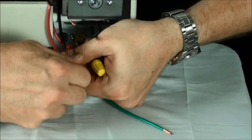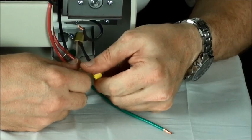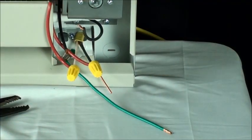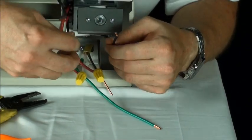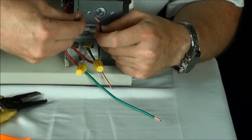After you get your incoming power hooked up, you want to hook your two black leads from the load side of the thermostat to the two black leads inside the heater.